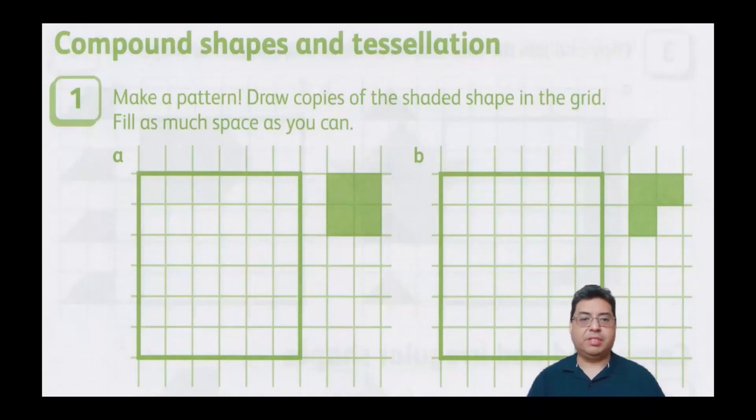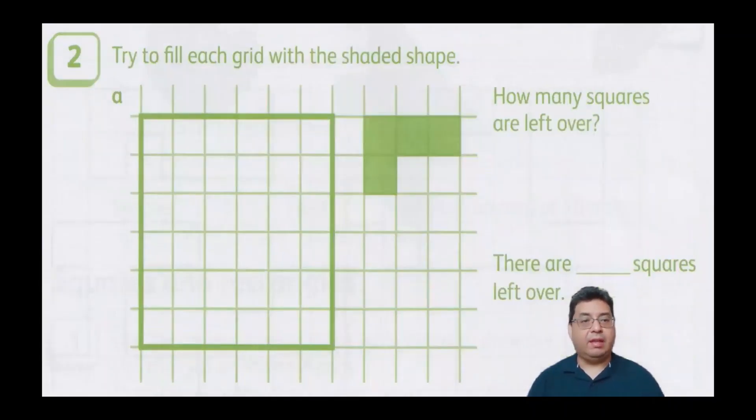So here's the bonus activity, and again, it'll be pretty much what I've shown you here. For this one here, you're just going to make a pattern, draw copies of the shaded shape in the grid, fill in as much space as you can. So I got a couple of other ones here. For this one, I basically want you to do the same thing, except right above me, you can see there are blank squares left over.